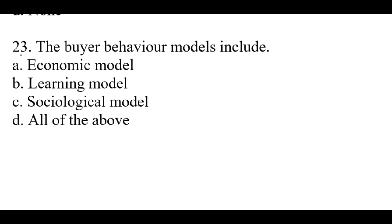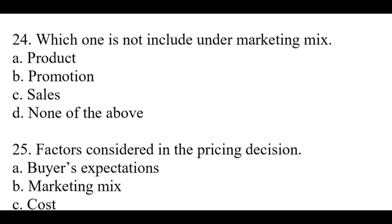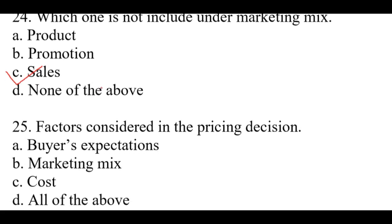Question number twenty-three: The buyer behavior models include — right option is D, all of the above: economic model, learning model, and sociological model. Question number twenty-four: Which one is not included under marketing mix? Right option is C: Sales.